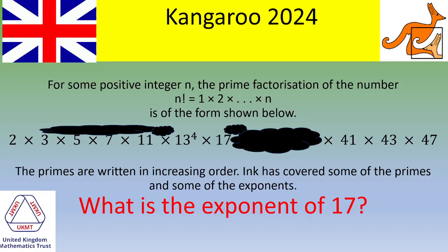Hello and welcome. In this video we look at an exercise given during the Pink Kangaroo 2024 — that was question 18. In this exercise, n is a positive integer, and the prime factorization of n factorial is given with primes written in increasing order. Unfortunately, ink has covered some of the primes and some of the exponents, and the question is: what is the exponent of 17? If you want to give it a try, please pause the video; otherwise, let's see the solution.